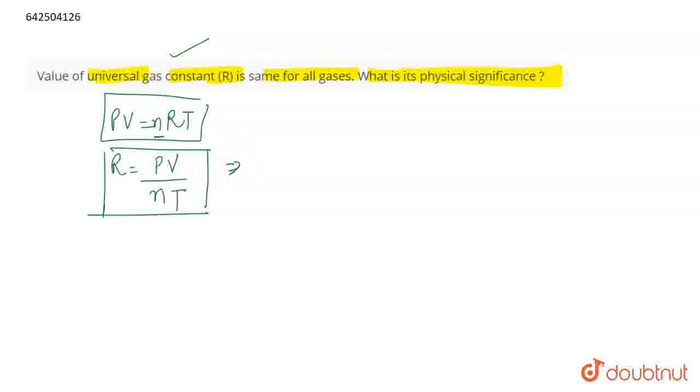Now, putting in the units of these terms, what is the SI unit of pressure? SI unit of pressure is pascals. What is the SI unit of volume? Meter cube divided by number of moles, the unit is mole. And for temperature, the unit is Kelvin.